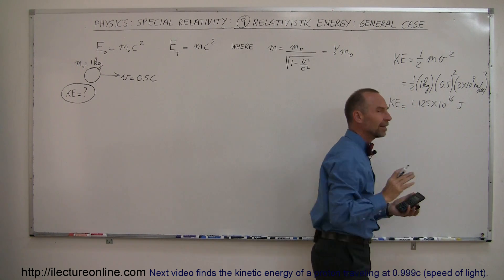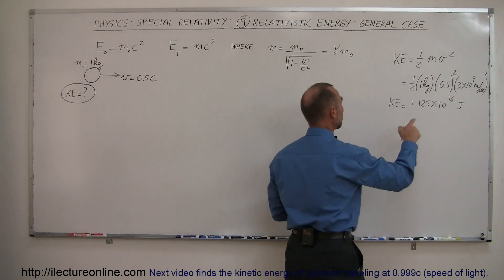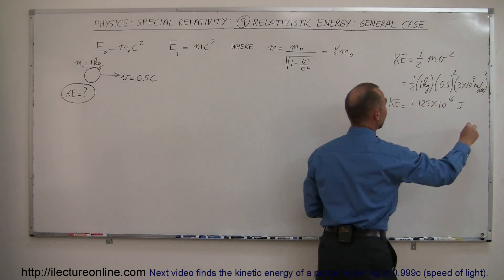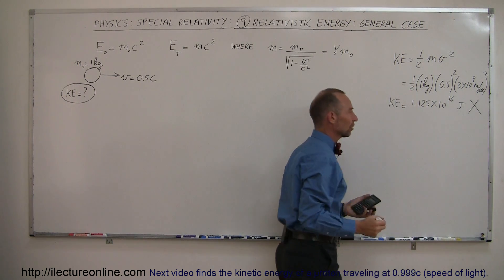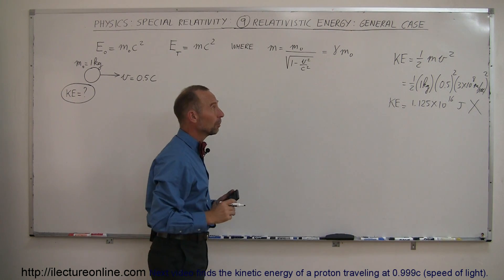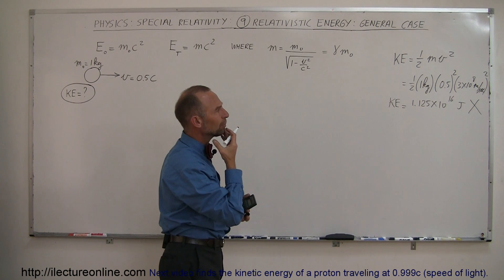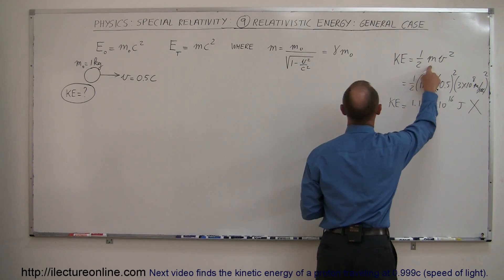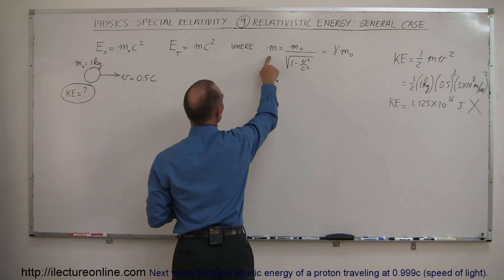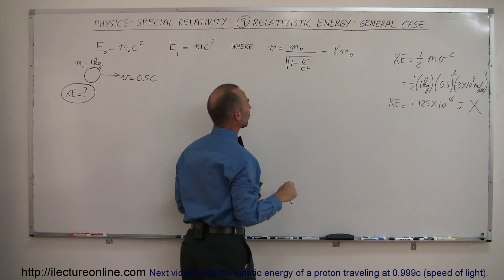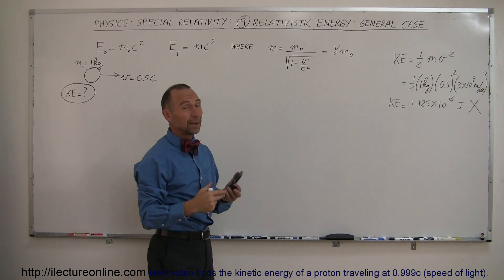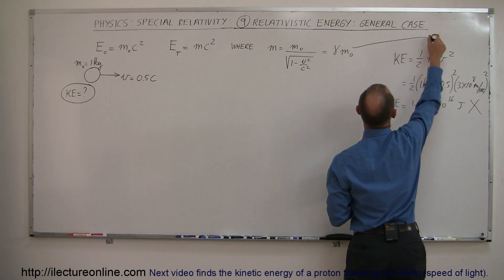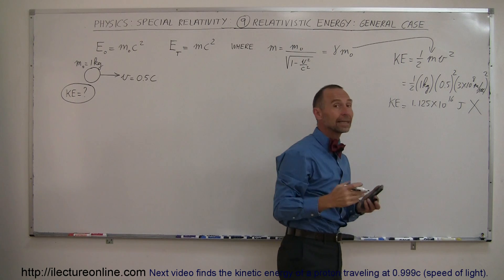But as you will find out in just a moment, when you're moving that fast at half the speed of light, this is not the correct answer. Maybe that's because the mass changes when you go that fast — the mass will increase according to the equation where mass equals the original mass divided by the square root of 1 minus v²/c², or gamma times m-naught. So maybe what we need to do is plug this relativistic mass in and recalculate the kinetic energy.